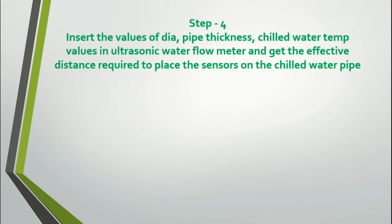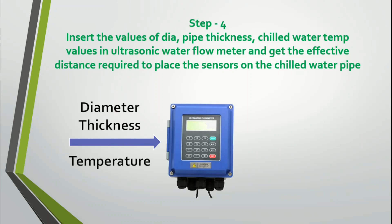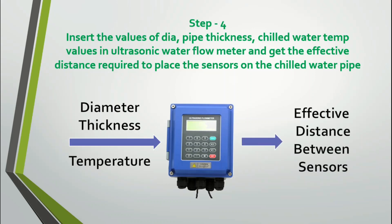Step 4: Insert the values of diameter, pipe thickness, chilled water temperature, etc., into the ultrasonic flow meter and get the effective distance required to place the sensors on the chilled water pipeline. The inputs required for the water flow meter are the diameter of the chilled water line found with the measuring tape, the pipe wall thickness (not the insulation thickness), and the temperature of the water inside. The flow meter will then provide the effective distance between sensors.